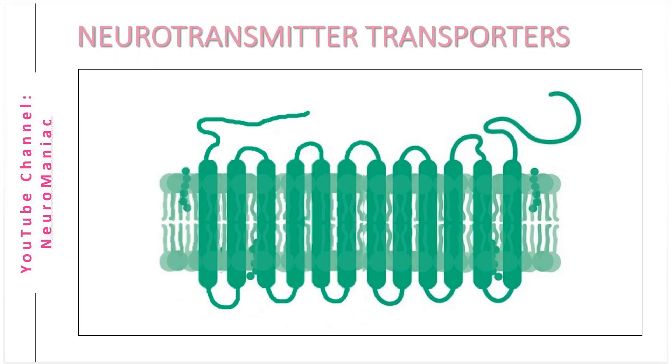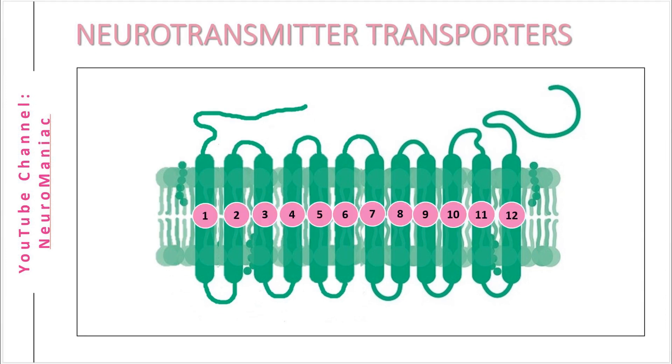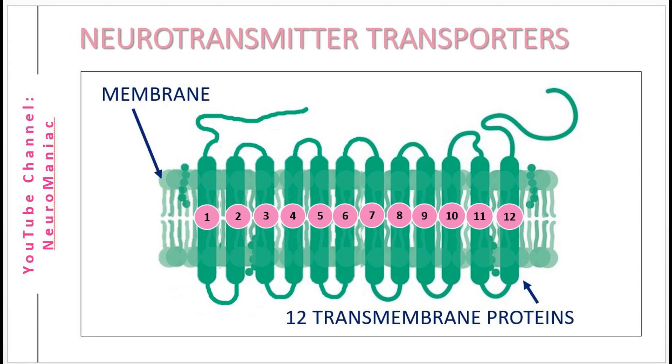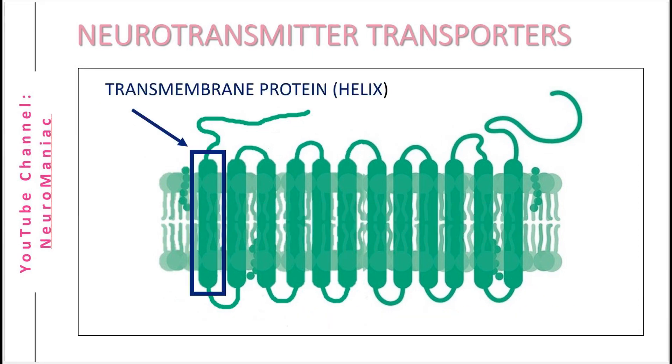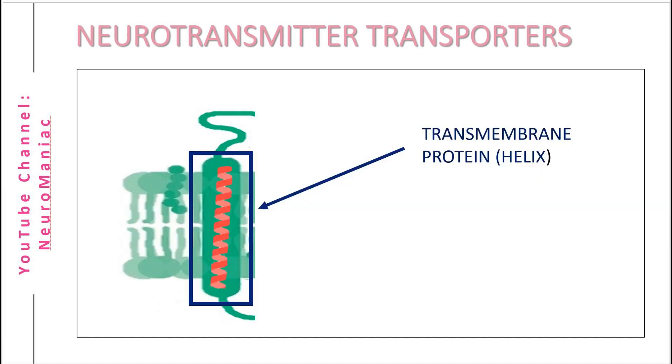First up, neurotransmitter transporters belong to a family of 12 transmembrane region proteins. This basically means that there are a sequence of helical bundles that span across the phospholipid bilayer membrane. These helices weave in and out of the membrane 12 times to form the transporter protein.